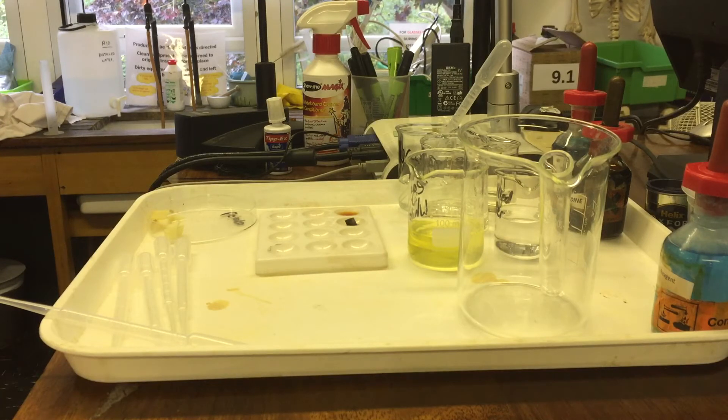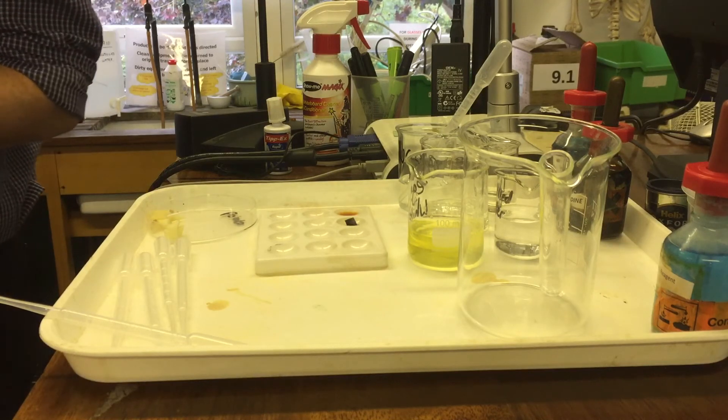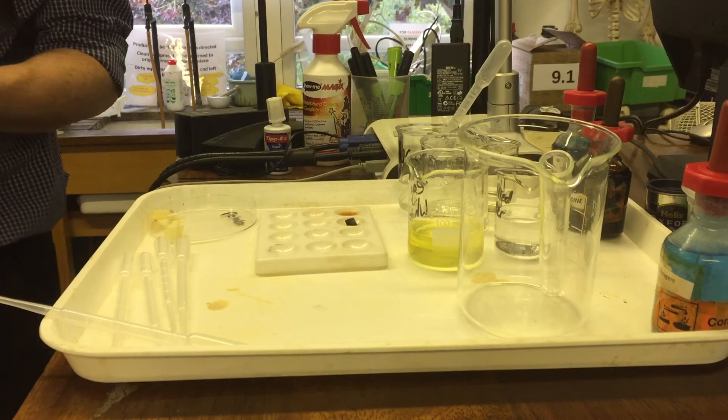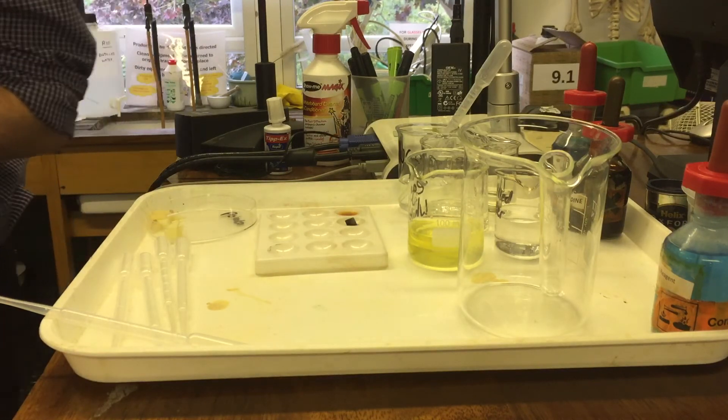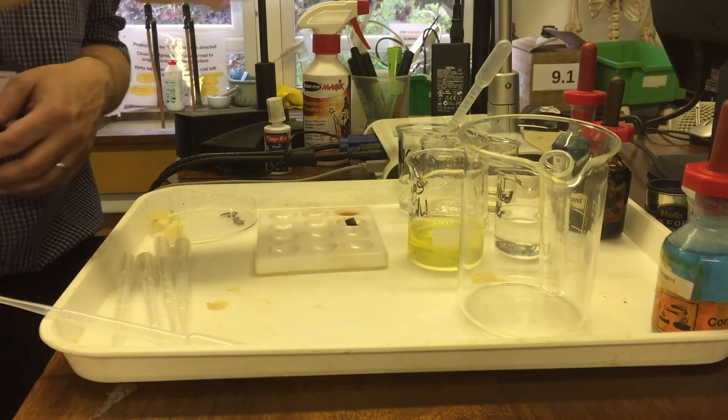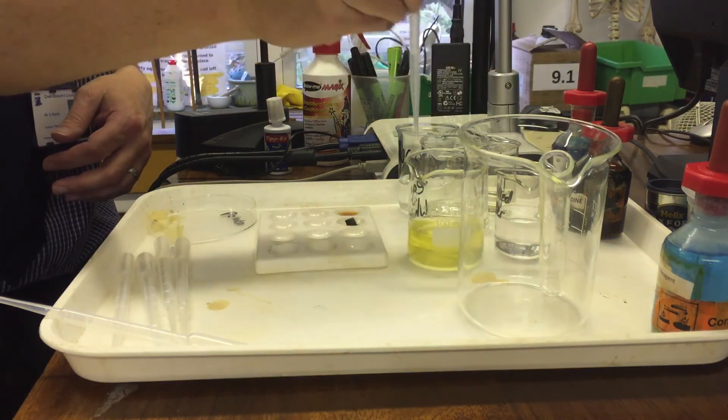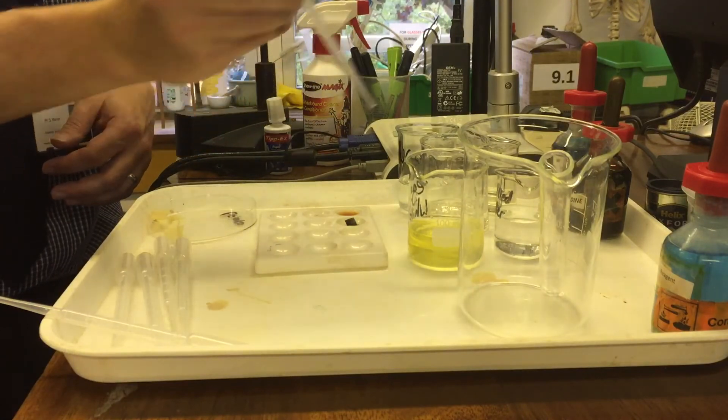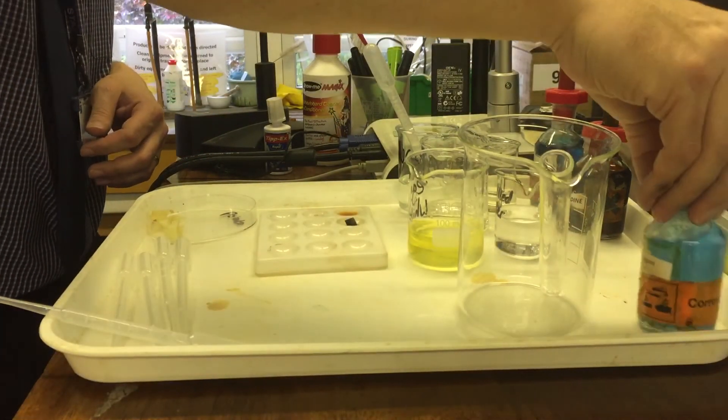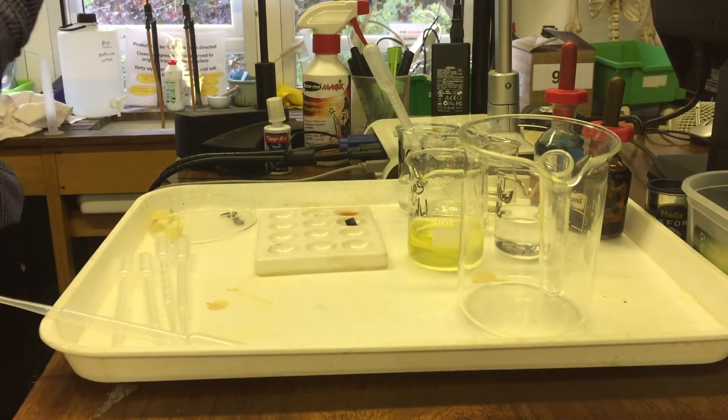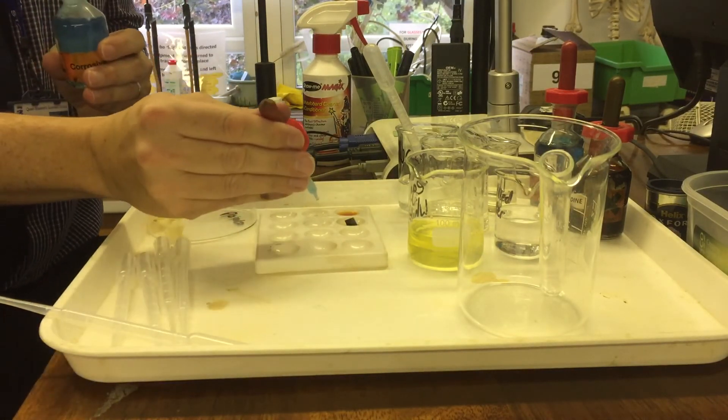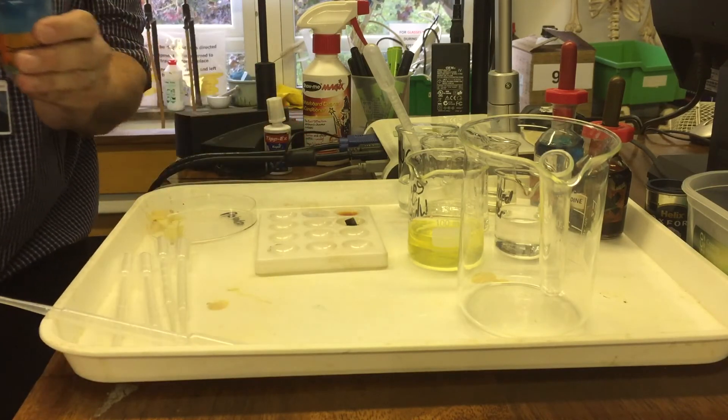Our next test is a test for protein. We're going to use something called biuret reagent. And again, just for comparison, I'm going to compare it with glucose. Here's glucose solution. So this should be our negative test. And if I add this reagent here, which is biuret, which is this lovely light blue, if I add it to this, it stays that light blue color. It doesn't change.